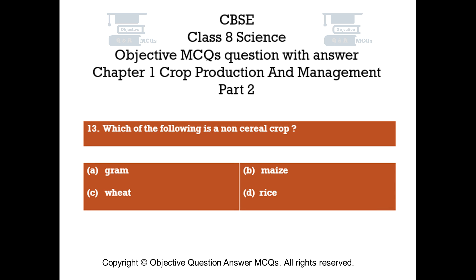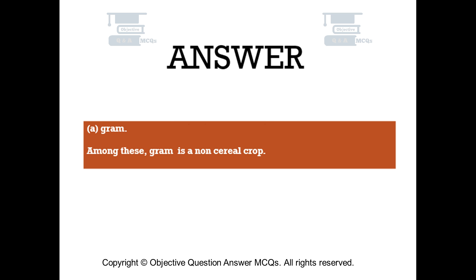Question number 13. Which of the following is a non-cereal crop? Option A: Gram. Option B: Maize. Option C: Wheat. Option D: Rice. The right answer is Option A, Gram. Among these, gram is a non-cereal crop.